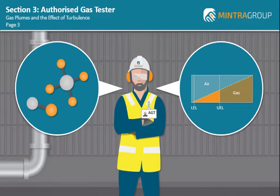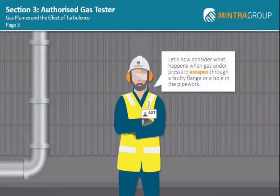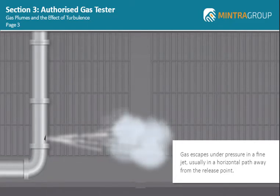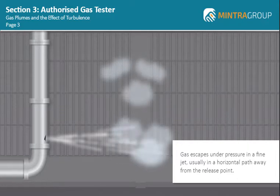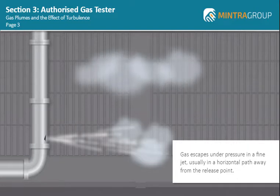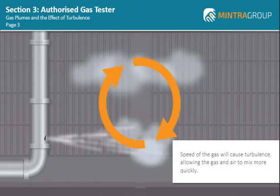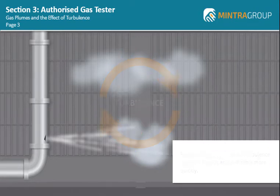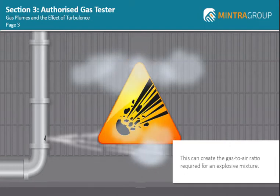Gas and air must mix in a certain ratio before it has the potential to create an explosive atmosphere. When gas under pressure escapes through a faulty flange or a hole in the pipework, the gas escapes under pressure in a fine jet, usually in a horizontal path away from the release point. But gradually, if it is a light gas, it will start to rise. As the velocity of the gas release reduces, the gas plume will spread out as it moves upwards. The speed of the gas moving through the air will cause turbulence, allowing the gas and air to mix more quickly, which in turn can create the gas-to-air ratio required for an explosive mixture.